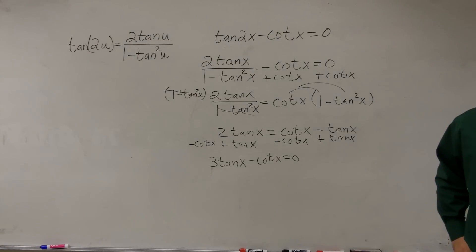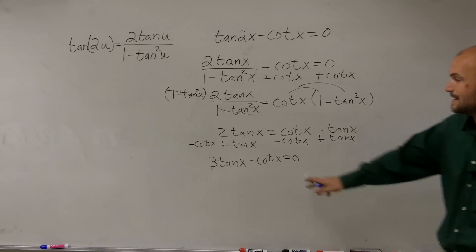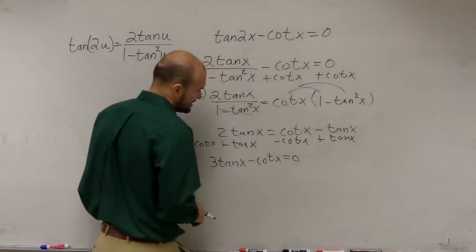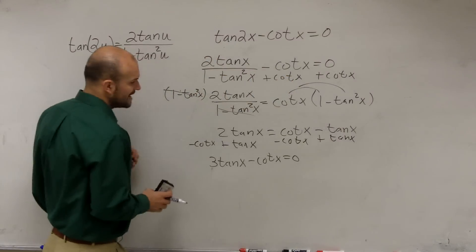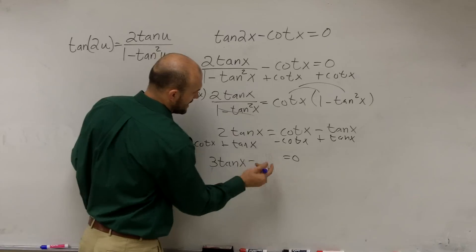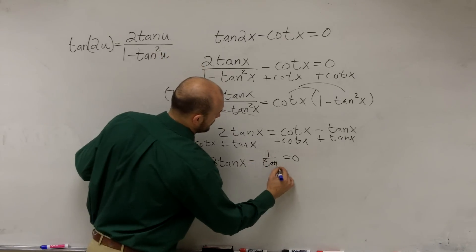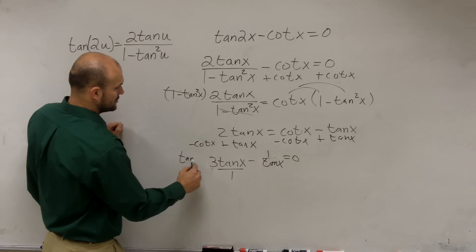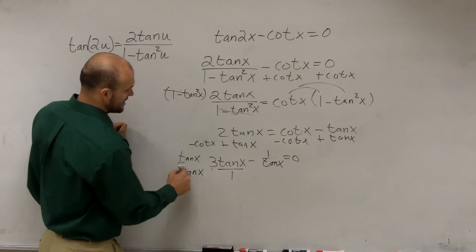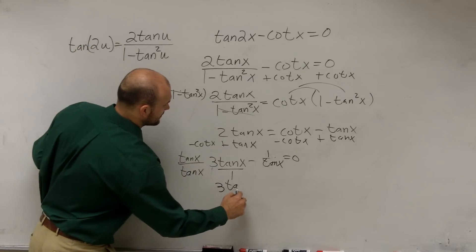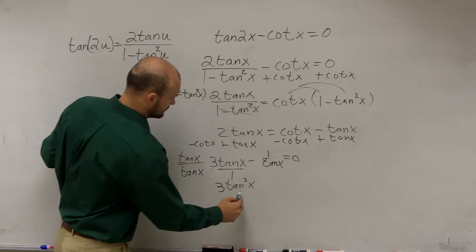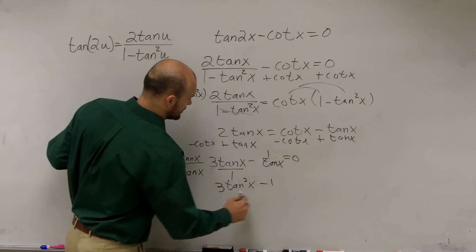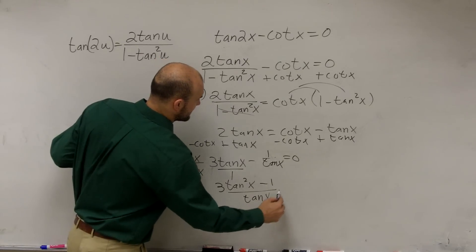Adding the tangent and subtracting the cotangent of x leaves me with 3 tangent of x minus cotangent of x equals 0. That's nice — we got rid of that square. To combine these, I can rewrite cotangent as 1 over tangent of x, and to get a common denominator I multiply by tangent of x over tangent of x, giving me 3 tangent squared of x minus 1 over tan of x equals 0.